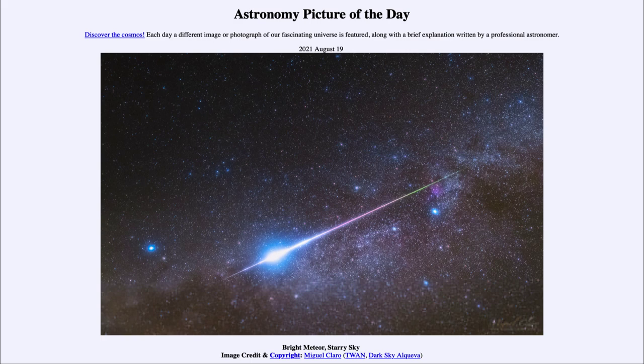So here today we get to see a meteor flashing through part of the Summer Triangle as it goes across the sky. So that was our picture of the day for August the 19th of 2021. It was titled Bright Meteor Starry Sky.